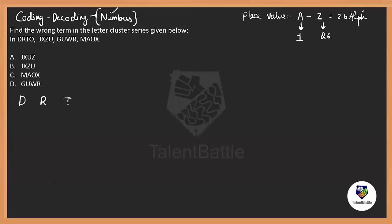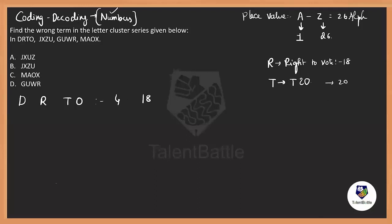Let's start with the cluster D-R-T-O. D's place value is 4. For R, remember 'right to vote' at age 18 — so R is 18. For T, remember T20 cricket — so T is 20. For O, remember the name 'E-JYOTI': E, J, O, T, I are multiples of 5. E is the 1st, so 5; J is 2nd, so 10; O is 3rd, so 15; T is 4th, so 20 — which matches T20. So O is 15.